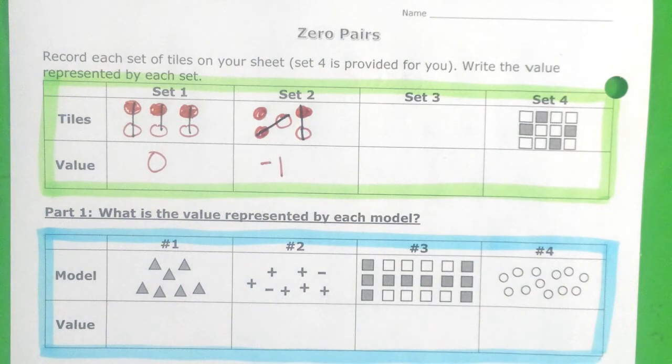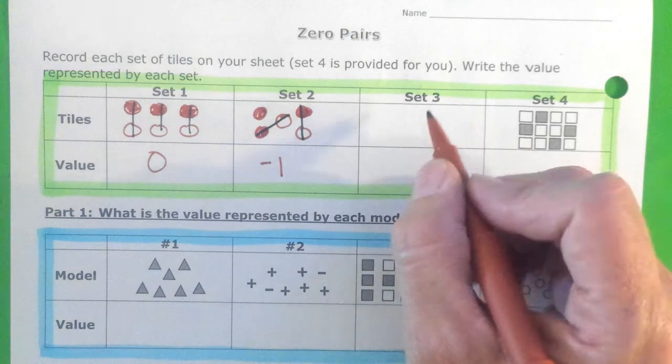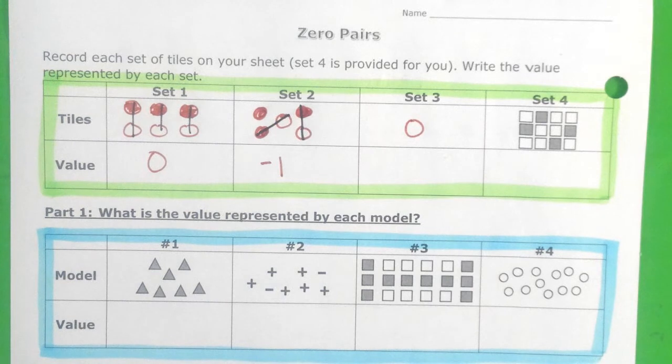Okay, my set three looks like this. Get ready. It's a lot. That's it. One positive tile. And if there's nothing to cancel it, then it's just going to be a positive one.